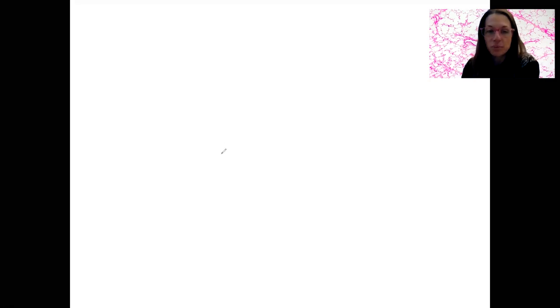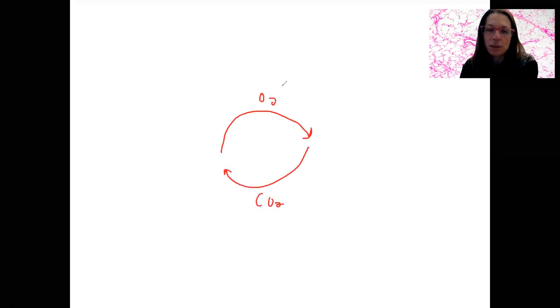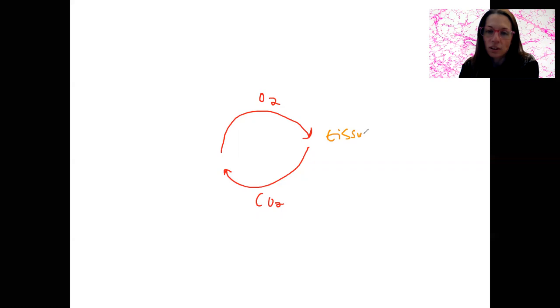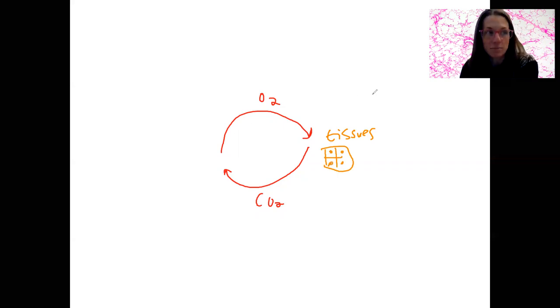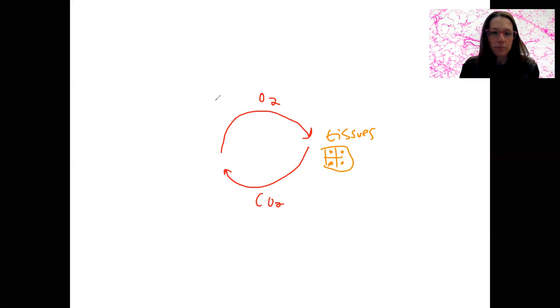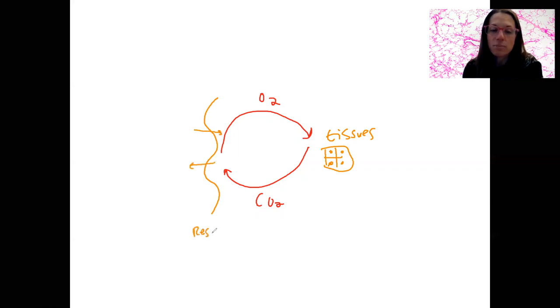Basically what we need to have happen is we need to get oxygen into the bloodstream to be circulated, and carbon dioxide needs to go out. So in this diagram here, if I've got my cells and tissues — these cells are producing carbon dioxide, we've got to get that out and get them oxygen. What we need for that is diffusion. These gases can just diffuse across a respiratory membrane.